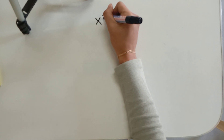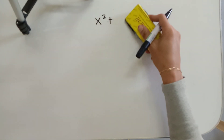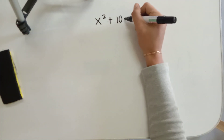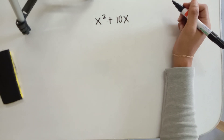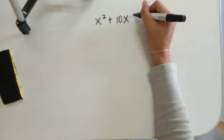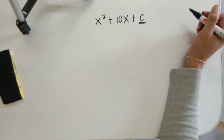Our topic for today is about perfect square trinomial, and we have to complete a given quadratic binomial to make it a perfect square trinomial. Let's consider this given quadratic binomial: x squared plus 10x. As we all know, a perfect square trinomial has three terms, and it lacks one term — that is, plus c — which is the term we are going to find.